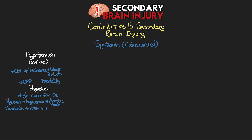Cerebral vasodilation, on the other hand, can also increase the patient's ICP. Another important contributor is increased metabolic demand — things such as hyperthermia, agitation, and seizures can increase the patient's metabolic demand and can ultimately put brain tissue at risk for ischemia.